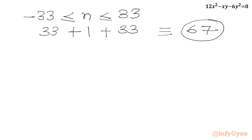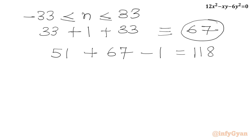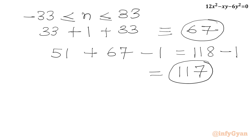Adding the two counts: 51 plus 67. However, we have over-counted the case x equals 0, y equals 0, which satisfies both equations. So we subtract 1. The total is 118 minus 1, giving us 117 ordered pairs (x, y) where x and y belong to integers.